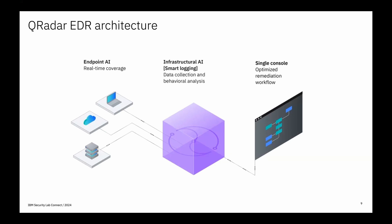QRadar EDR is also available in multiple deployment options for customers. It is available as a SaaS platform where IBM takes care of the entire deployment. It is also available as on-premises where you have a single 3-node server managed by the customer. I would now invite my colleague Vikram to talk about the second solution IBM provides — QRadar SIEM — and also show a live demo of the integration we are talking about.